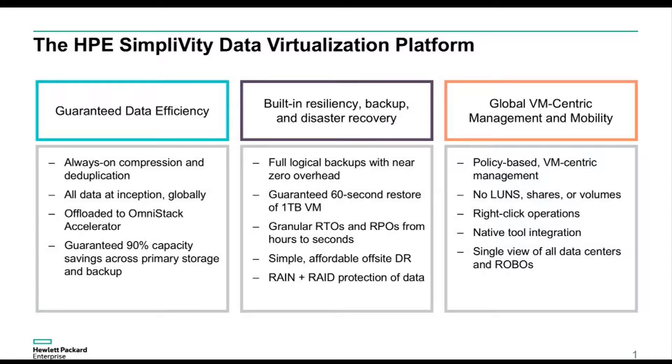This all happens through what we call our OmniStack accelerator card — a PCIe device we put into every single node that we offload the deduplication and compression effort to. It helps ensure that we can do all that in a regular performance manner, so we're not hurting performance by doing deduplication, and it allows us to avoid having an extra hit on the core CPUs so we're not stealing from customers' business applications.